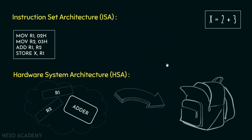Generally, computers with the same ISA will run the same kind of programs and are also said to belong to the same family. This concept will be more clear as we progress. Now we will move on to the classifications of computer architecture, but before diving straight into it, a bit of a history lesson is required so that we can properly understand various nomenclatures.